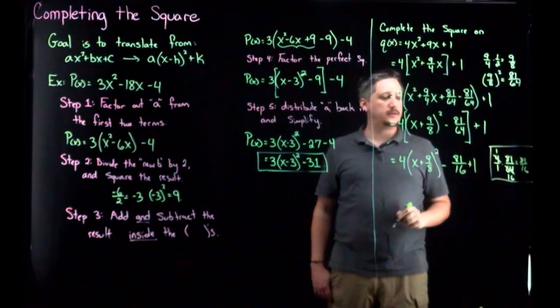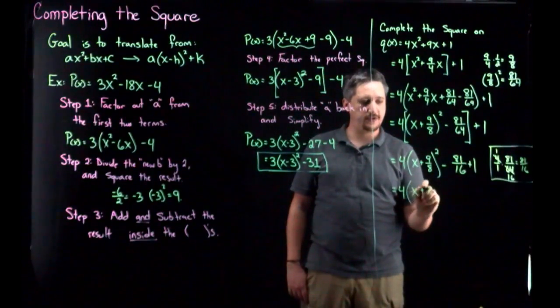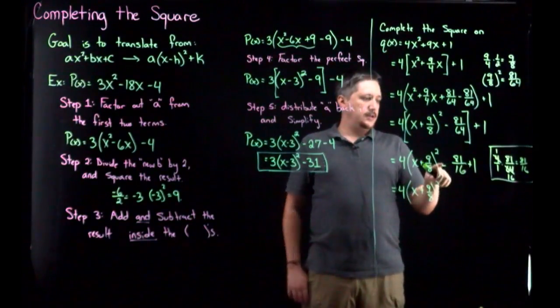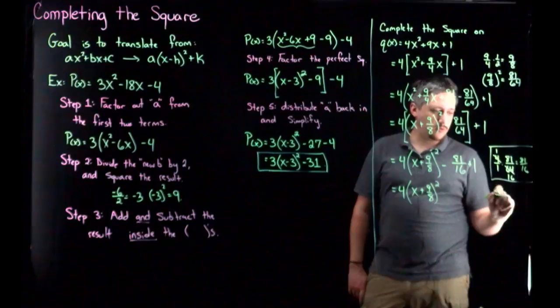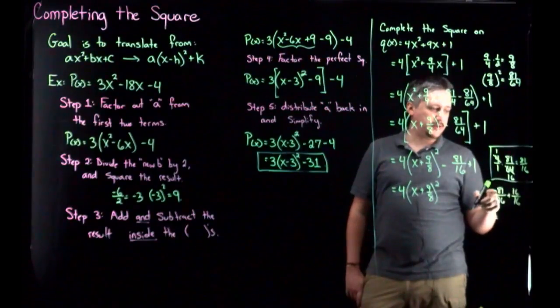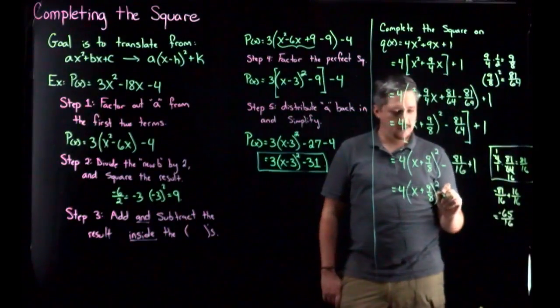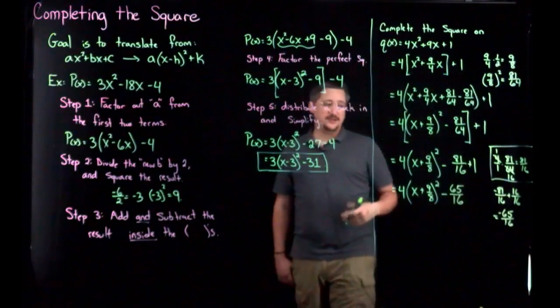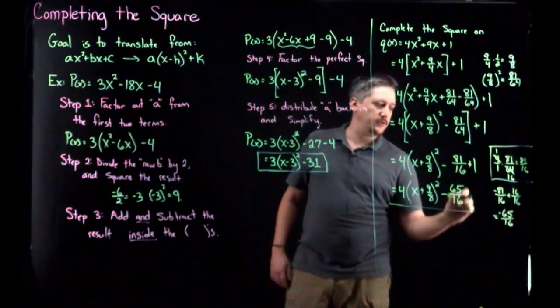That's its own little side thing. And then I got to clean that up. So this is four times (x plus nine eighths) squared. And this is going to be negative 81 over 16 plus 16 over 16. So I can do negative 81 over 16 plus 16 over 16. That's going to be negative 81 plus 16 is going to be 65 negative over 16. It's going to be negative 65 over 16. Which really is a pretty terrible number. But it is what it is, unfortunately. And so this is the result of completing the square.